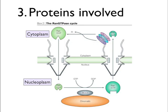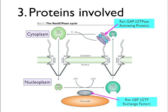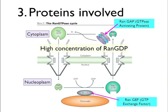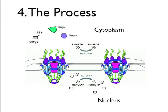The RAN-GTPase Activating Protein is located on the cytosolic side of the nuclear pore complex, associated with its cytosolic extensions. The RAN-GEF, the GTP exchange factor, is located in close association with the chromatin and therefore inside the nucleus. This arrangement generates a very high concentration of RAN-GDP in the cytosol and a high concentration of RAN-GTP in the nucleoplasm, and this gradient regulates the entire process of nucleocytoplasmic traffic.